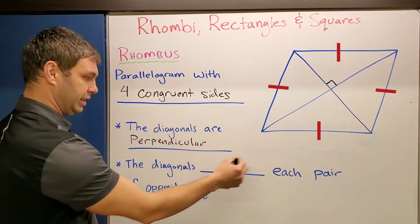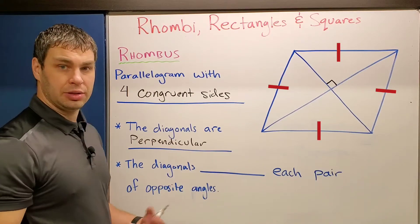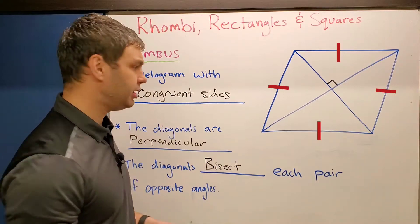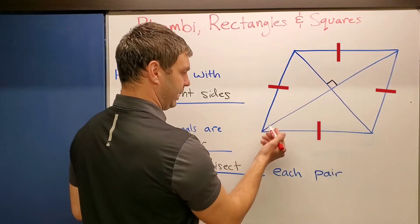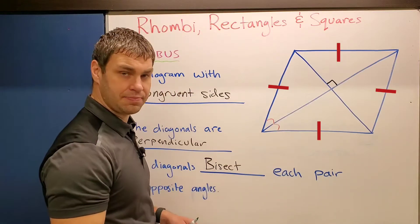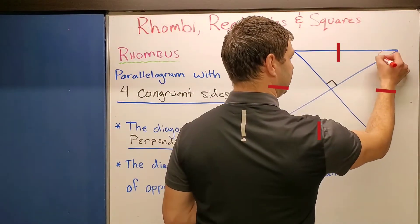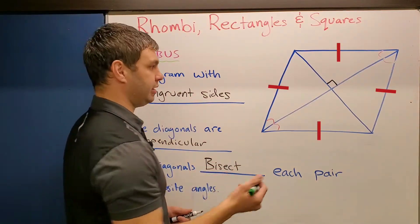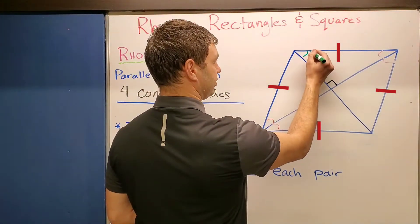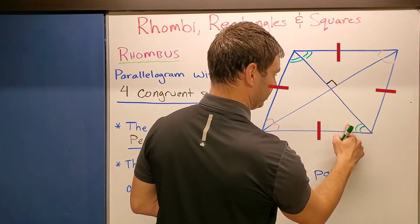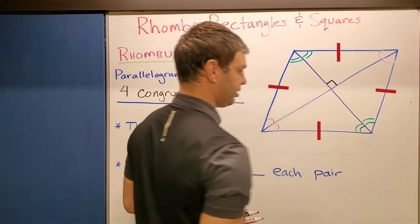Alright. What else do we know? It says the diagonals bisect each pair of opposite angles. And to show this, what I can do is since it's being bisected for this angle here, I know this and this are going to be the same. And those are also going to be the same as these ones up here. And I can do the same thing in a different color for my other two angles. These two, I'll give two loops each. And then this one is the same as this one, just like that.